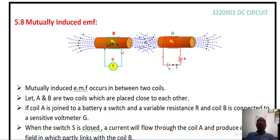Similarly, if we change the current passing through coil B, it will induce an EMF in coil A. This is called the reciprocal property.